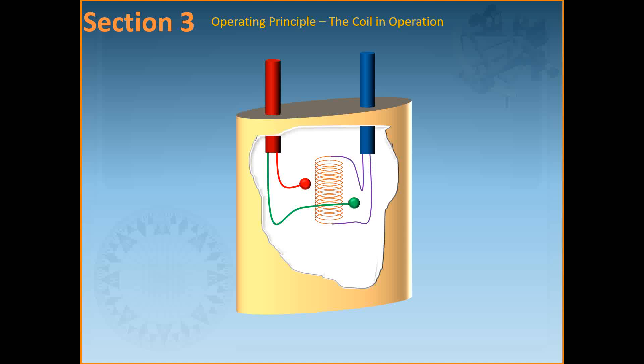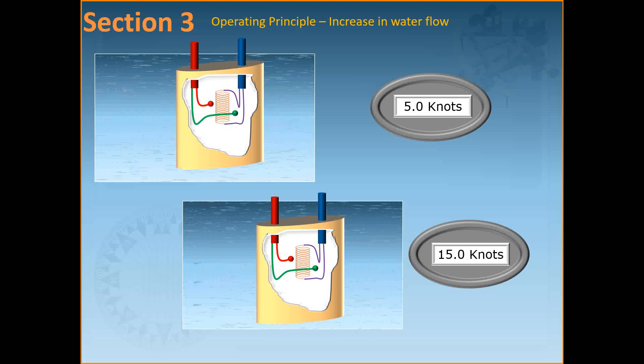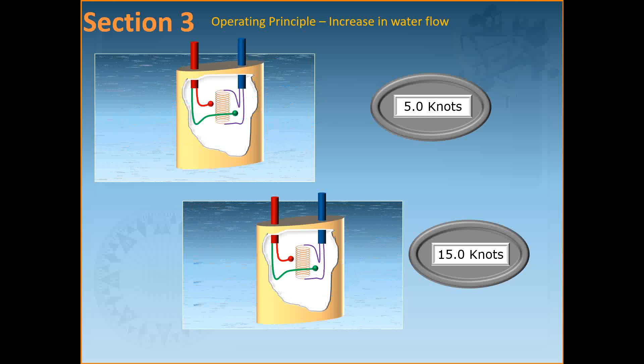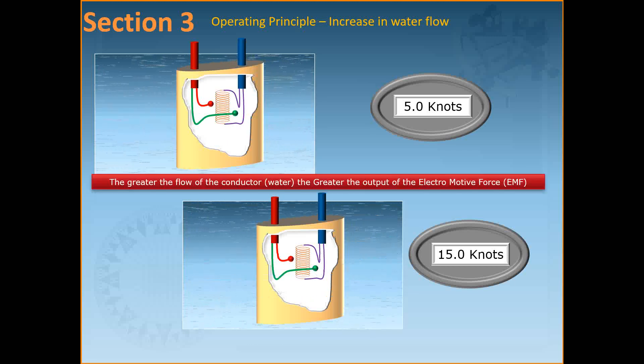The EM speed log works on the principle of measuring the flow of fluid past a sensor by detecting electromagnetic induction. The operation relies on the principle that any conductor moving across a magnetic field will have induced in it a small electromotive force. Alternatively, the EMF will also be induced if the conductor remains stationary and the magnetic field moves relative to it. In the diagrams shown, where water is moving more slowly in the first drawing than the second, the voltage produced is proportionally different, as voltage is proportional to the speed of water flowing past the conductor.